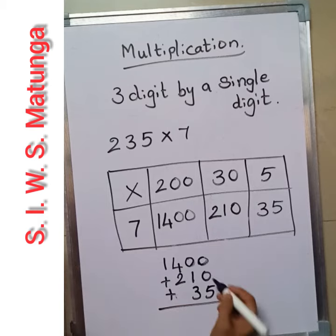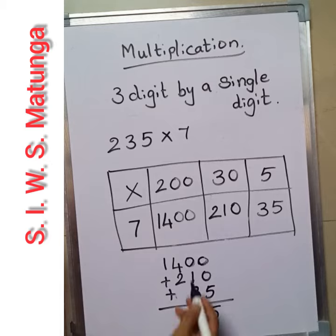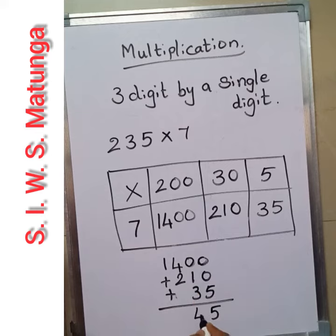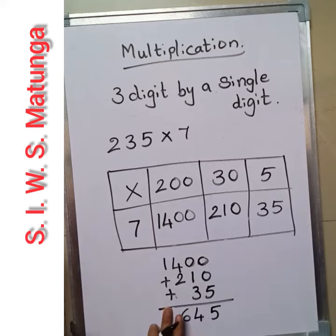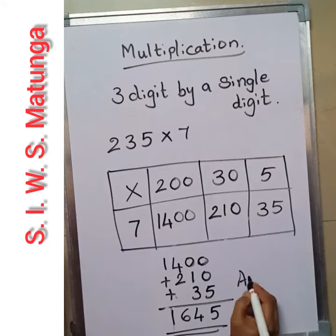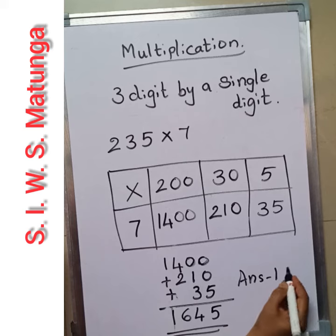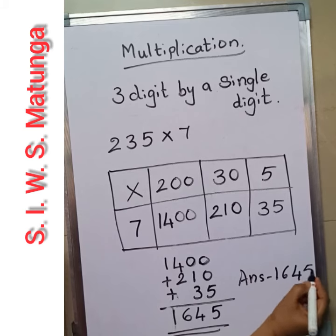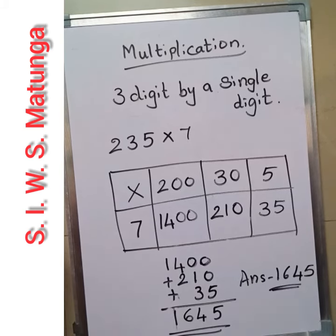Now add these. 0, 0, 5 is 5. 0, 1, 3 — 0 and 1 is 1, plus 3 is 4. Then 4 and 2 is 6. 1 carries over. The answer is 1645. This is 3-digit multiplied by 1-digit.